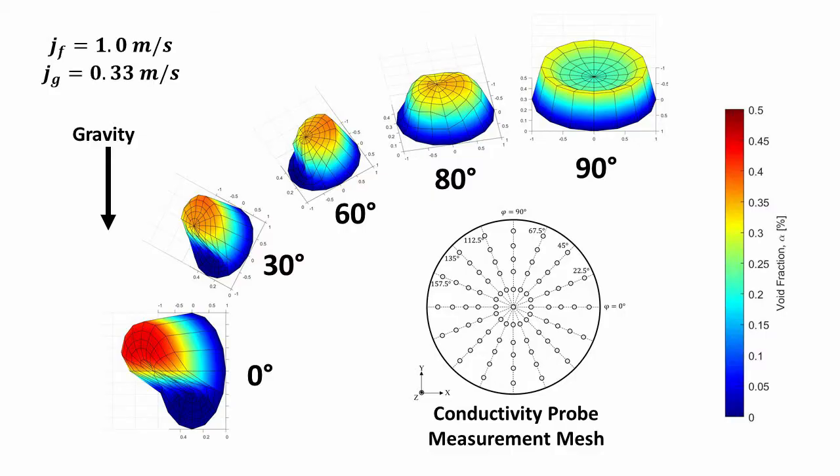Data from the connectivity probes can be used to calculate area average values for model development and to investigate the local distribution of two-phase flow parameters. These distributions can be compared against 3D models.